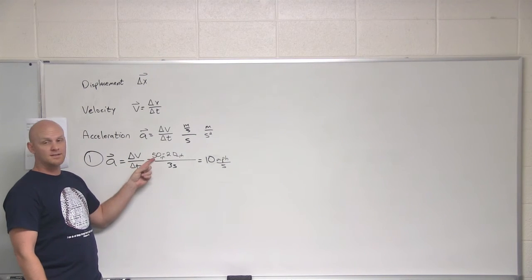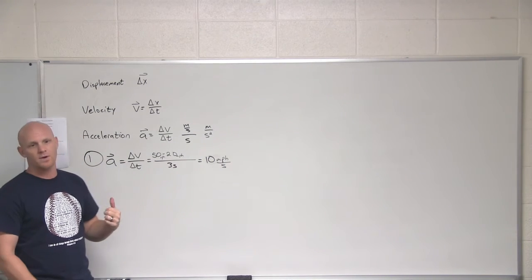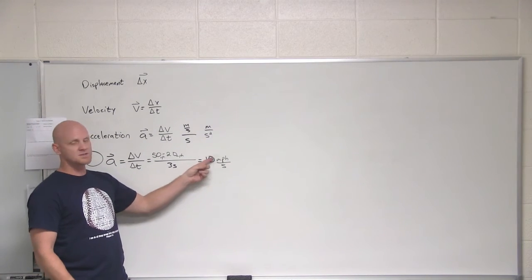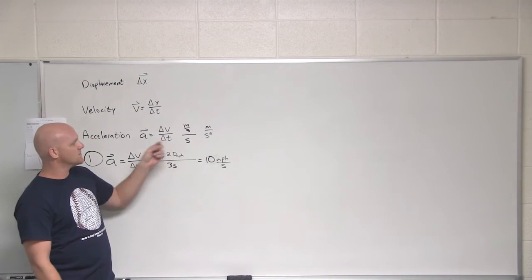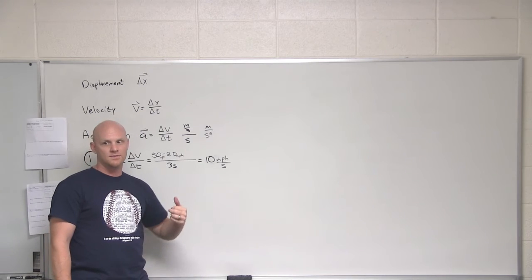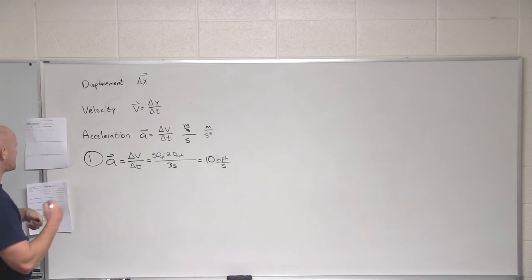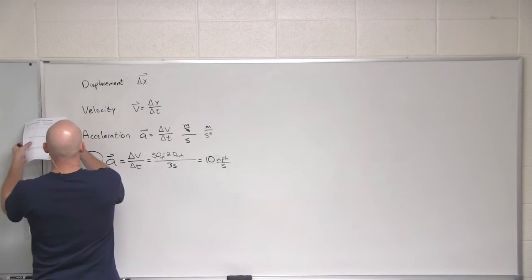Notice if we kept this acceleration up, how fast would we be going one second later? 60 miles per hour. Another second after that, 70 miles per hour. Every second we're increasing our speed by 10 miles per hour. If you can look at it, we start using metric units the same way. It will save you a lot of heartache. Understanding this will make your life a lot easier. All right, let's look at question number two.